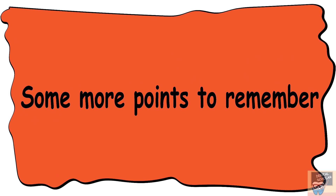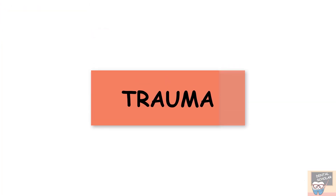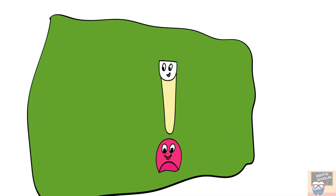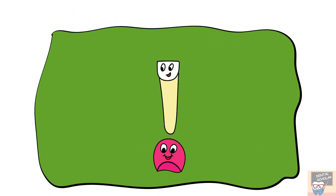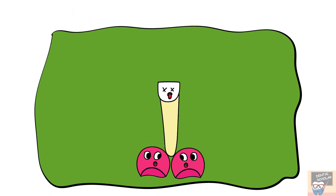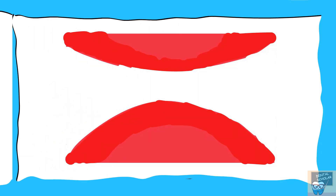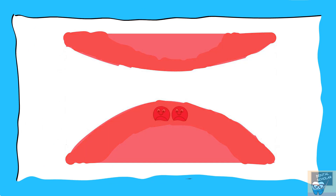Now let's see some additional points to remember. Trauma is one of the most common causes of fusion or gemination. Trauma to a deciduous tooth, if transferred to the developing apical permanent tooth germs, might cause splitting of the permanent tooth germs, which results in gemination. Depending on the direction of trauma, it can also force adjacent developing tooth buds together, which results in fusion.